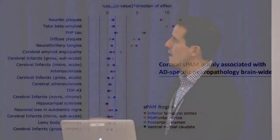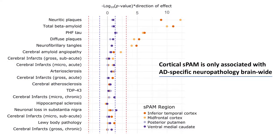To answer whether this is specific to traditional Alzheimer's core pathologies — amyloid plaques and neurofibrillary tangles — versus other known pathologies that accumulate with age: pure Alzheimer's disease is very rare. We find that only cortical measures of SPAM are strongly associated with the core pathologies. The limbic regions — putamen and caudate — were not associated, and no other pathologies such as TDP-43 were strongly linked to this score.